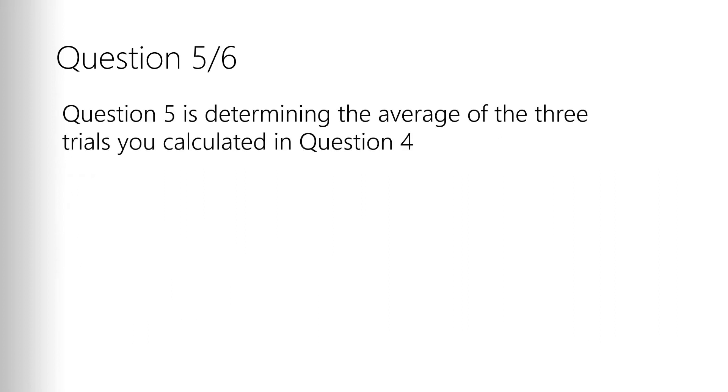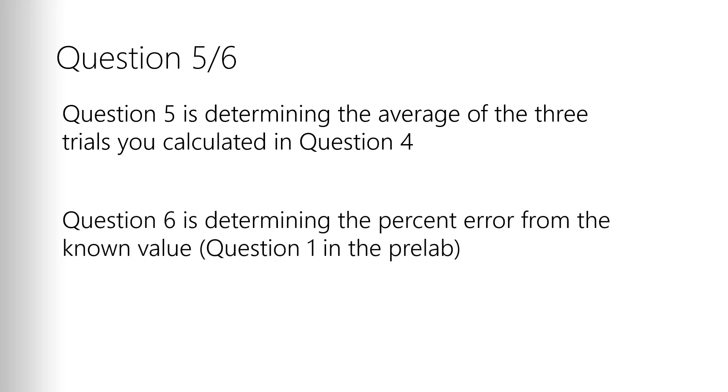Question five and question six, just like last time, question five, take the average of the three values you determined in question four. So you take those three C values from each of the trials, which you calculated in question four, just get the average from them. And last, compare yours to the percent error, get a percent error from the known value.